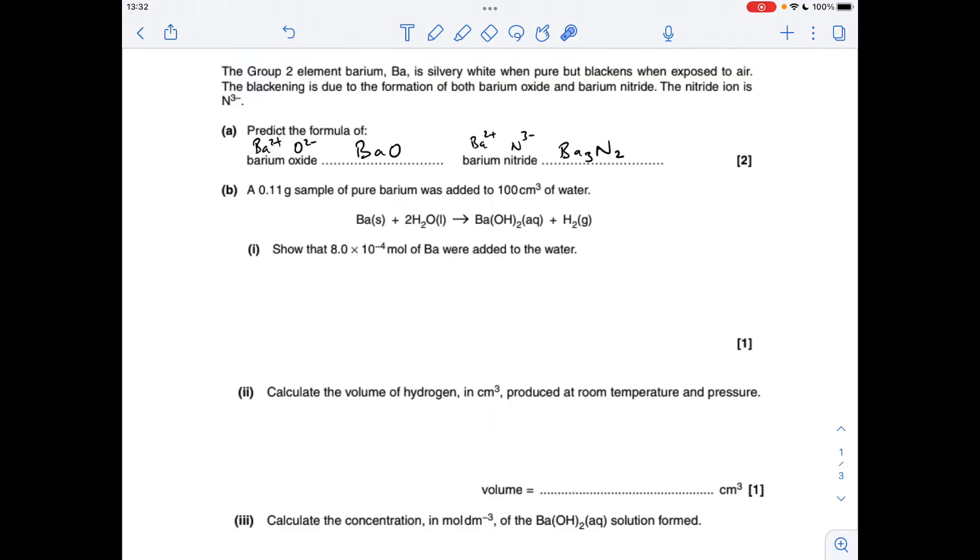For part A, we've got to give the formula for barium oxide and barium nitride, so it all boils down to the charges of the ions. Barium oxide is made from the Ba2+ ion and the O2- ion, so we just need a one-to-one ratio of those, so it's BaO. For barium nitride, we've got the Ba2+ and the N3- ions, so to get the charges equal and opposite, we multiply this one by 3 and this one by 2, which gives the formula Ba3N2.